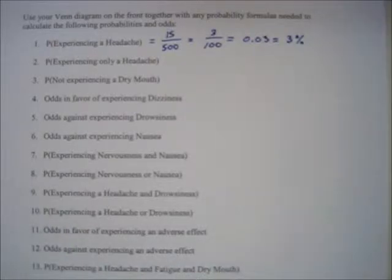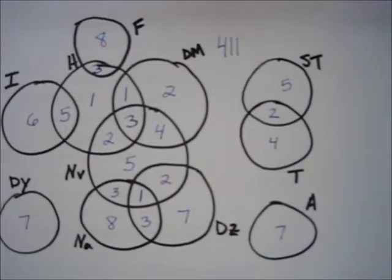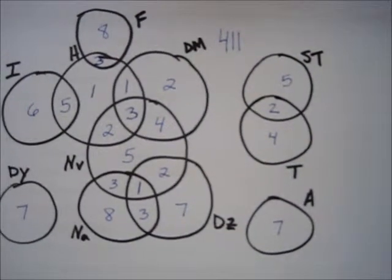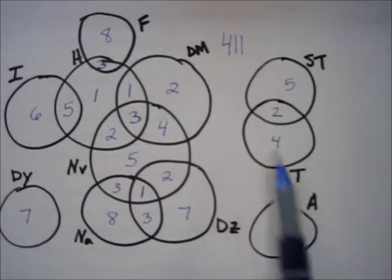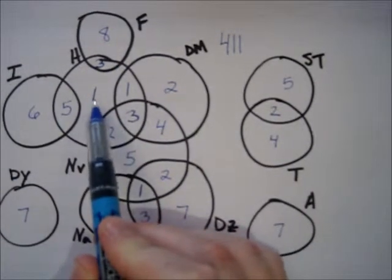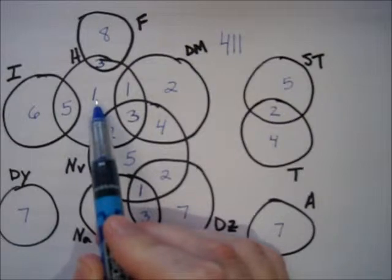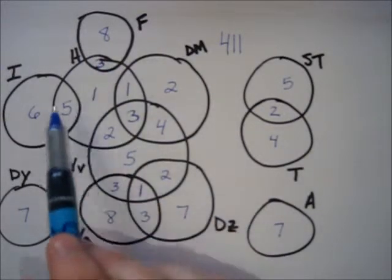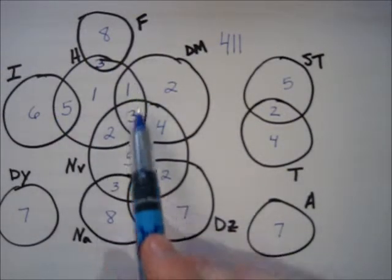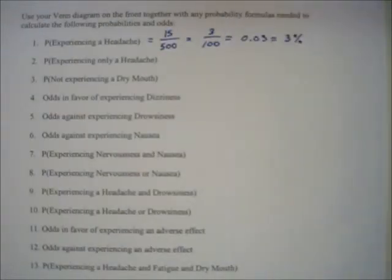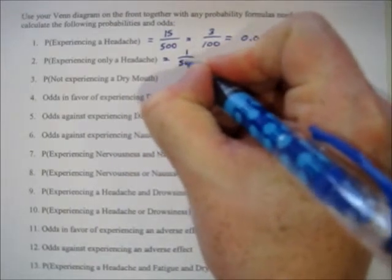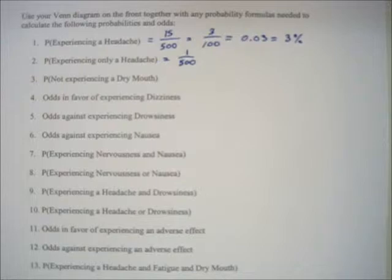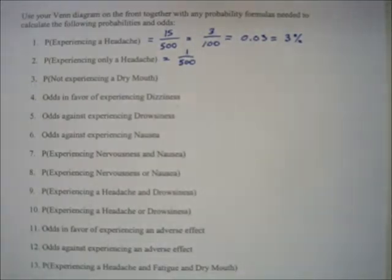Problem 2 says: what's the probability of experiencing only a headache? Looking on the diagram, there's just one person who had only a headache. All the other people who had headaches also experienced some other type of side effect. So there is only 1 person out of 500 patients that experienced only a headache.